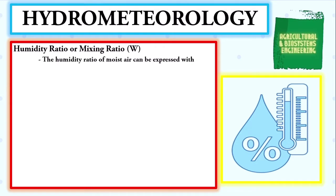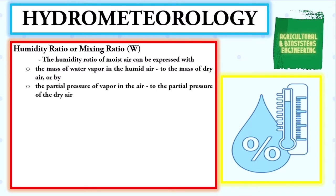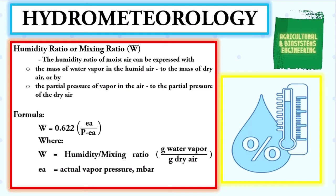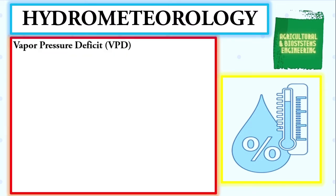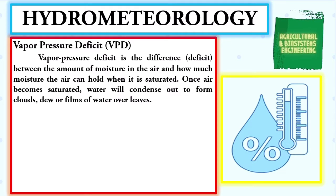Next we have the humidity ratio, or mixing ratio. The humidity ratio of moist air can be expressed as the mass of water vapor in humid air to the mass of dry air, or by the partial pressure of vapor to the partial pressure of dry air. The formula is: W = 0.622 × ea / (P − ea), where W is the humidity ratio in grams of water vapor per grams of dry air, ea is the actual vapor pressure in millibars, and P is the atmospheric pressure of 843 millibars.